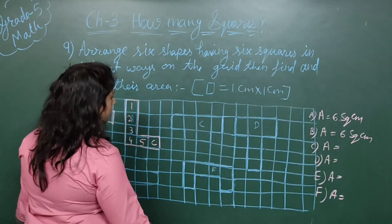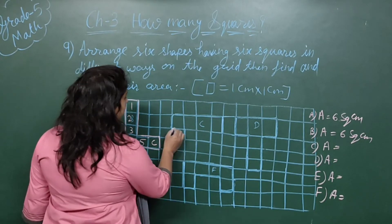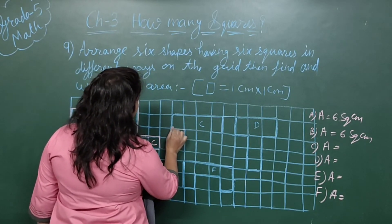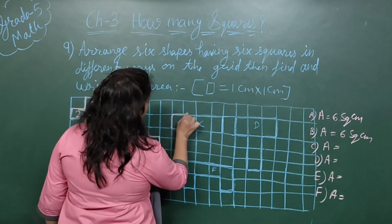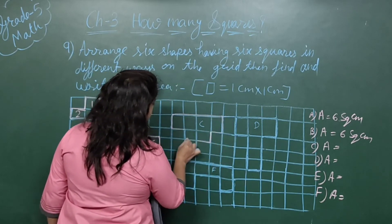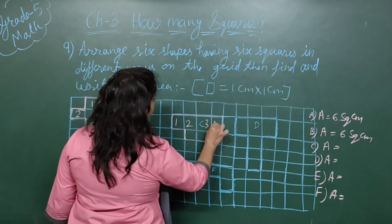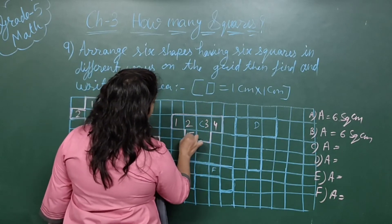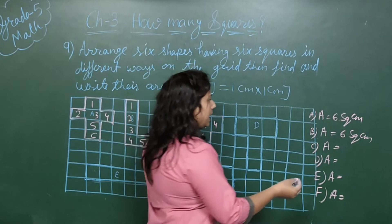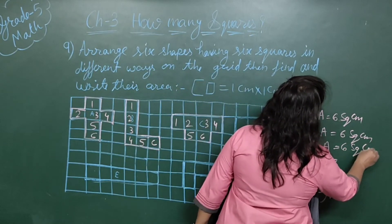Now I am trying to draw this — you can draw by yourself also. This picture also has 1, 2, 3, 4, 5, 6. It is also having an area of 6 square centimeters.